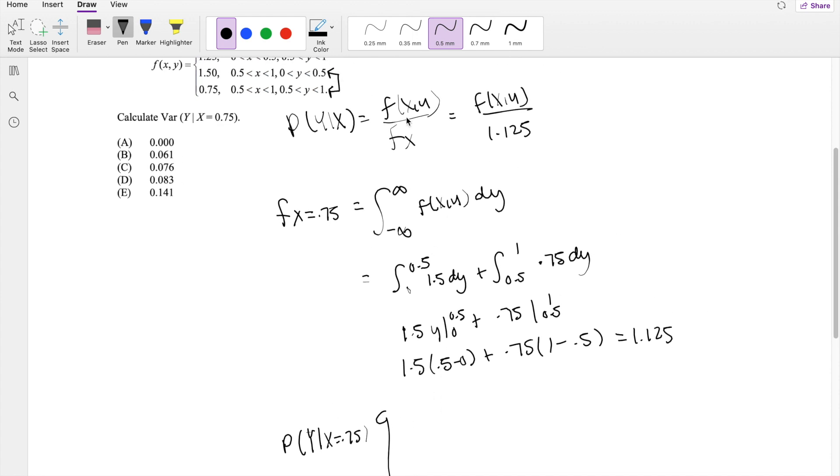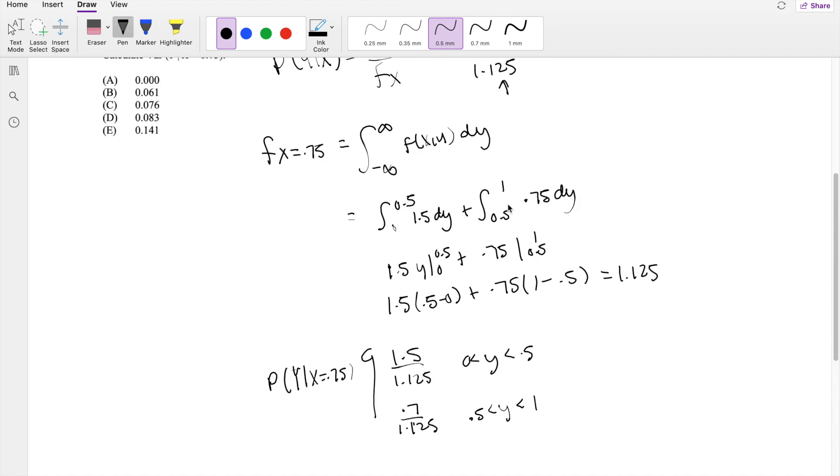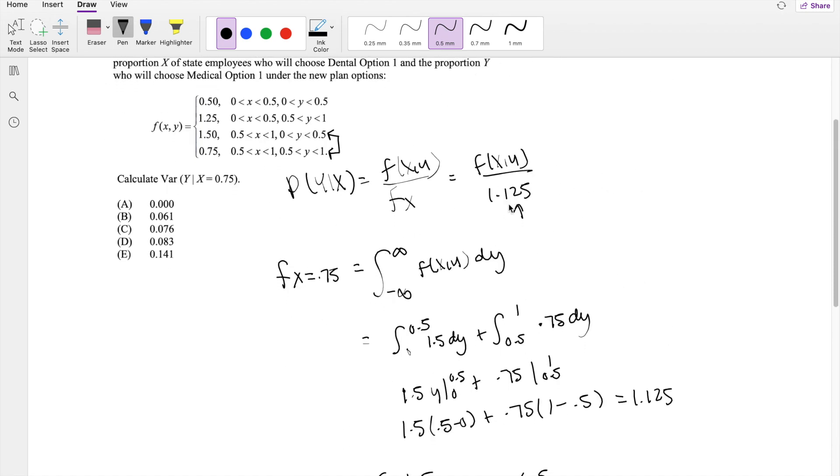So when f of xy, that's going to be 1.5, divided by our thing here, 1.125, for when y is between 0 and 0.5, and the second part right here, it's going to be 0.75, divided by 1.125, for when y is between 0.5 and y. So that's a key thing here, because we want to make sure we take care of all of 0.75.